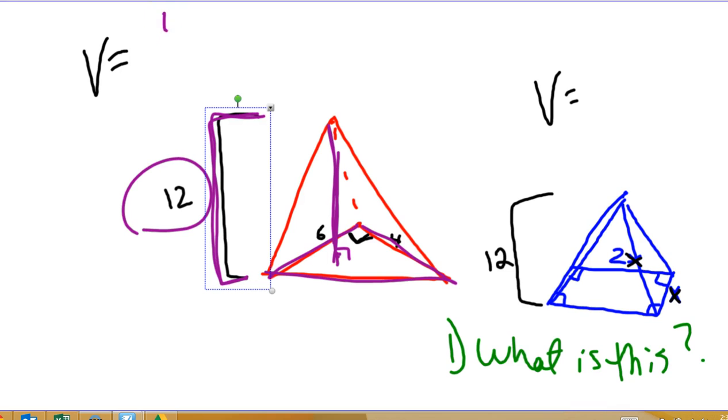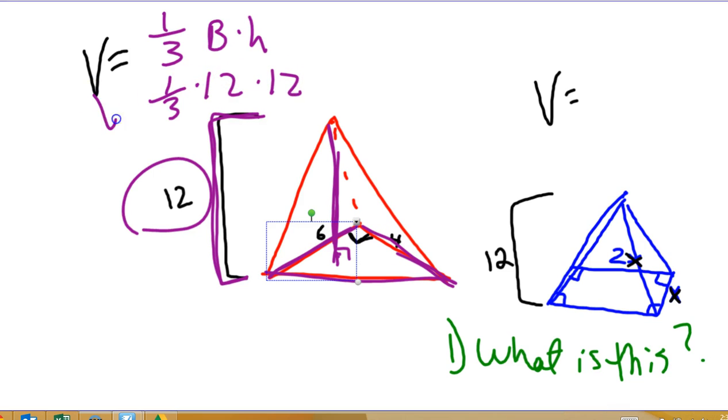And so the volume is 1 third area of the base times the height. All right, so the triangle itself would be a triangle. 6 by 4 triangle is 1 half times 24 or 12 times the height of 12. So this would give me a volume of 1 third of 12 times 12 is 48. And then we don't know, so it's units cubed because it's the volume.